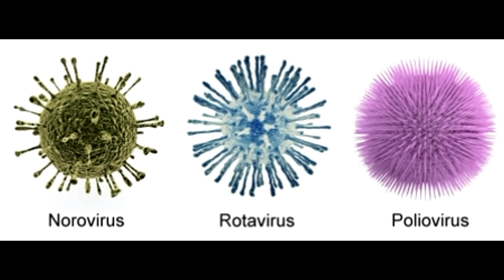Enveloped viruses also have a protein coat, but this capsid is encased within an outer lipid membrane. It is this lipid envelope that allows the virus to firmly stick to its target cell.